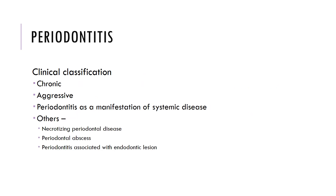Periodontitis — the clinical classification would divide it into chronic, aggressive, or periodontitis as a manifestation of systemic disease. Other forms of periodontitis are necrotizing periodontal disease, periodontal abscesses, or periodontitis associated with endodontic lesions.